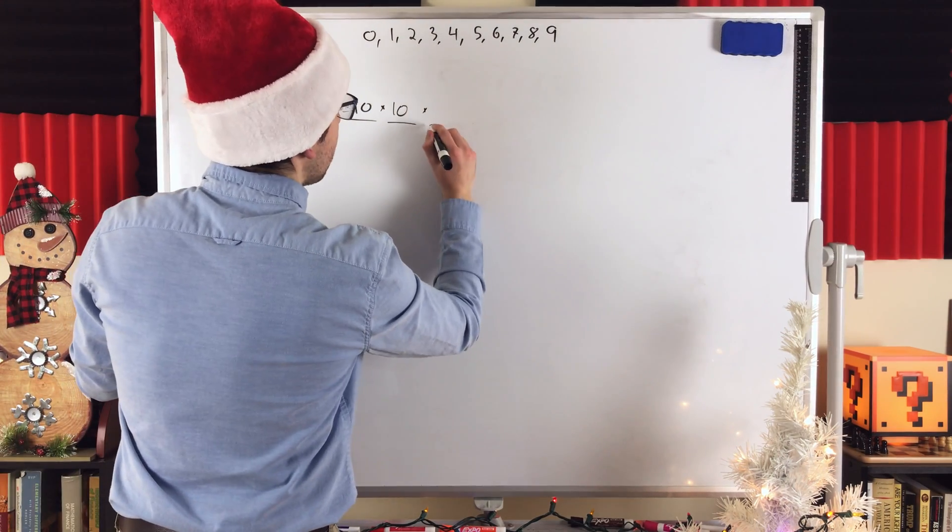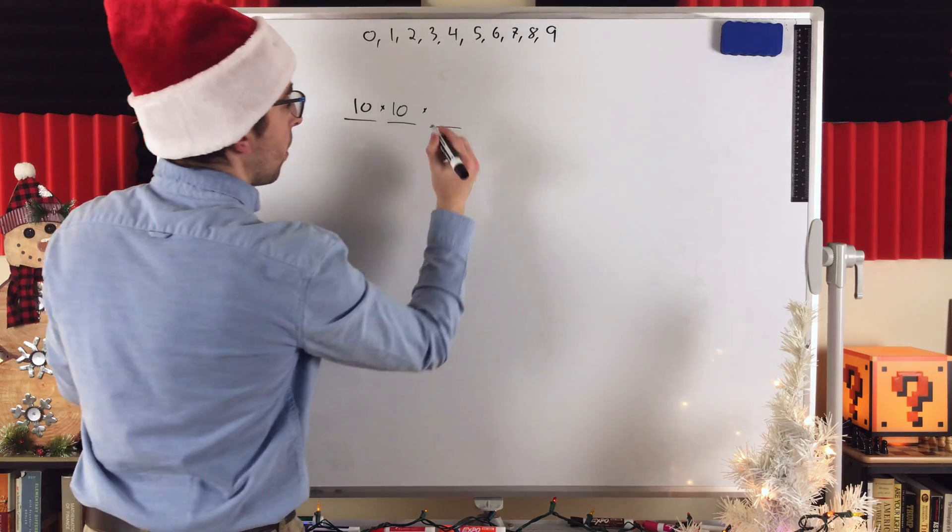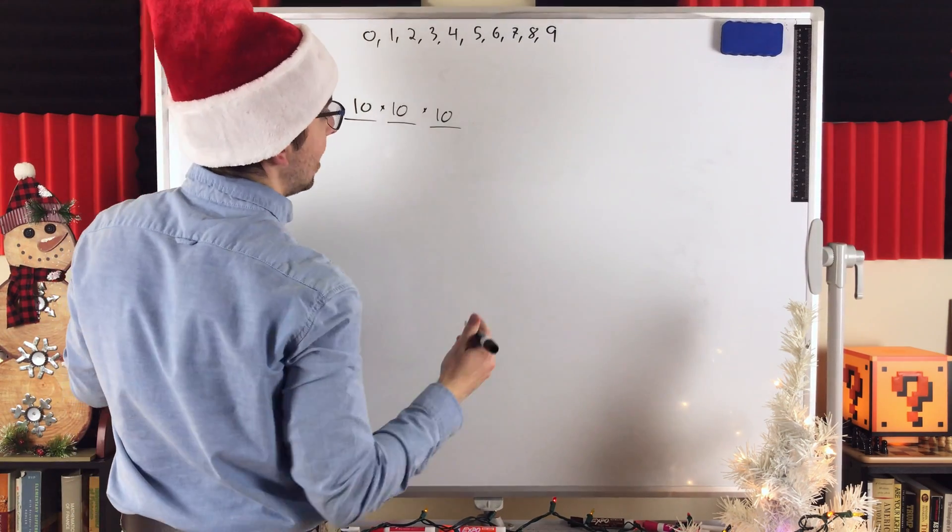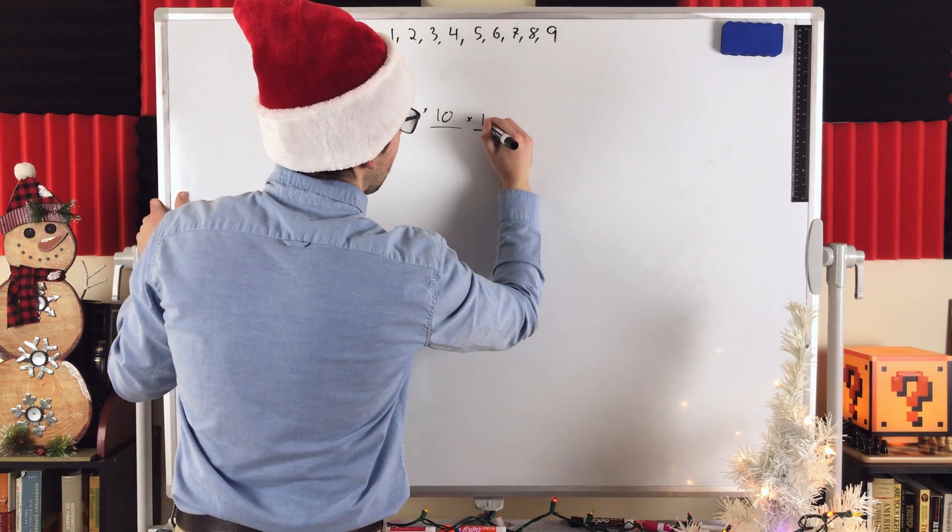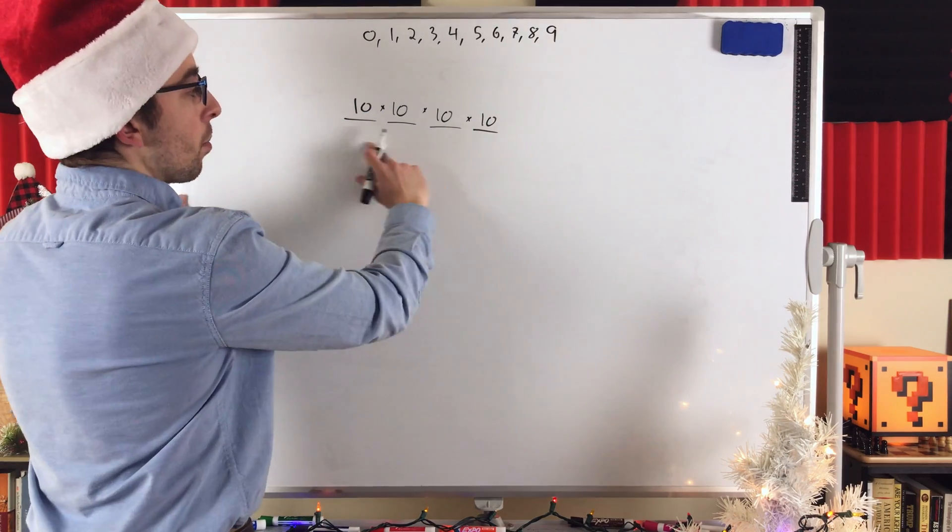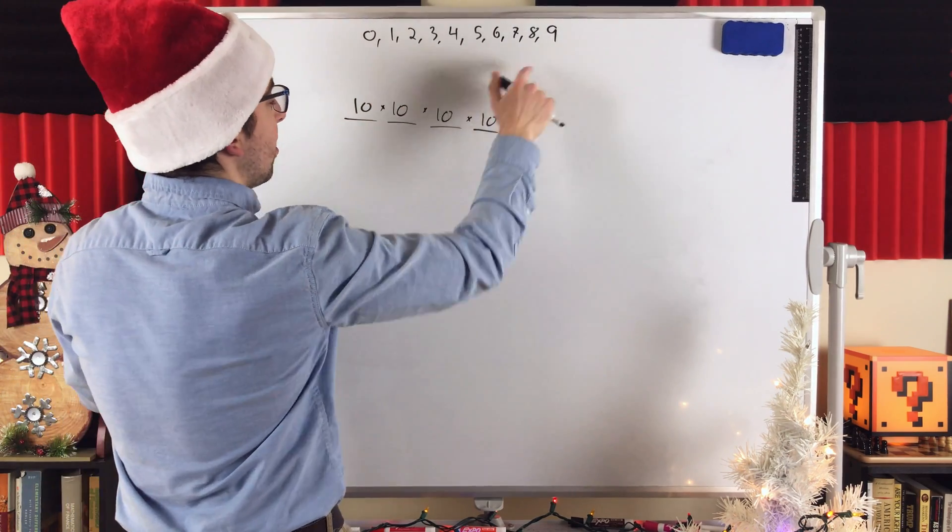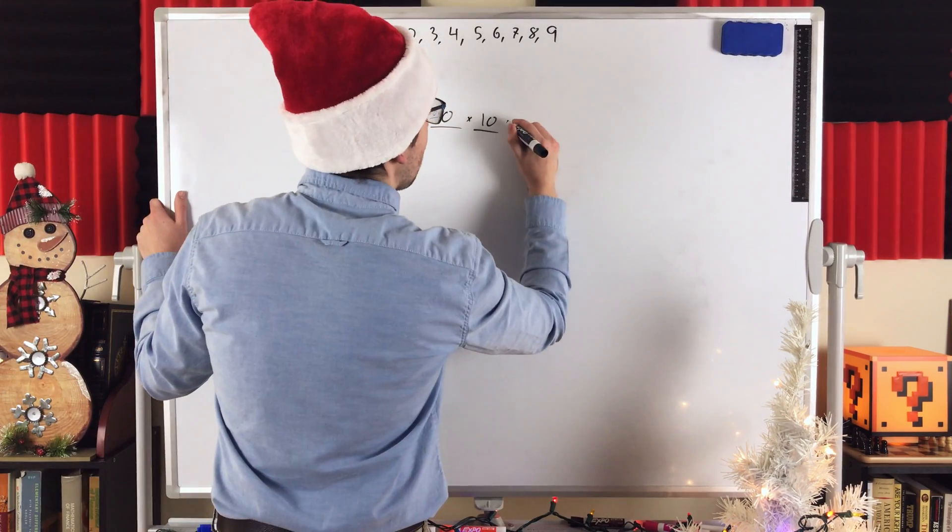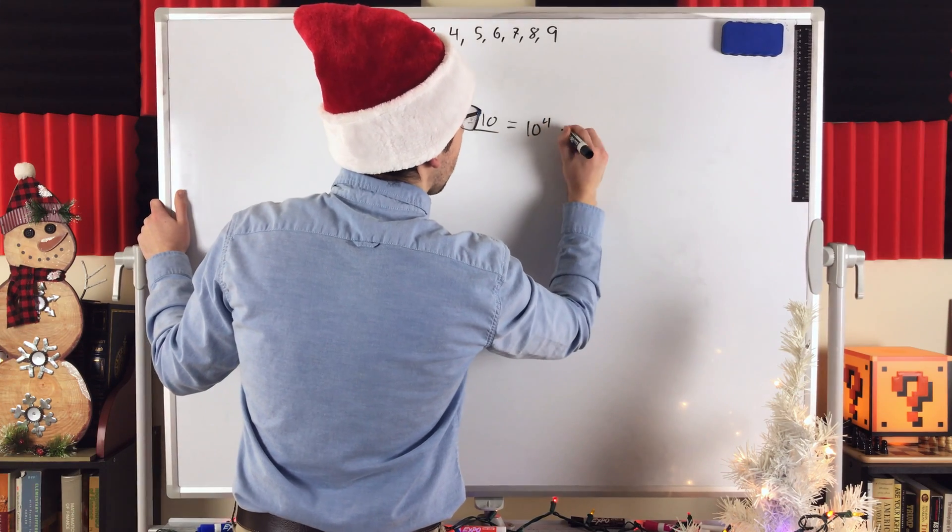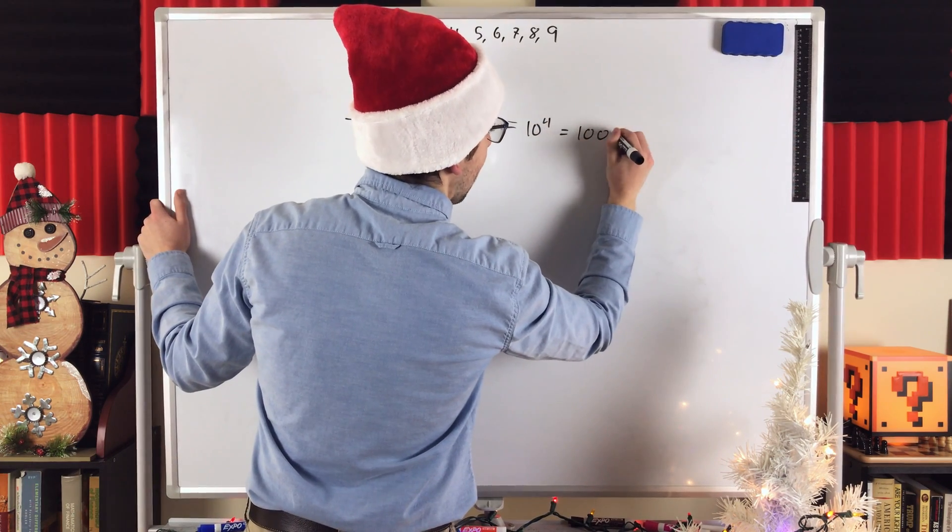Then, same thing, it's pretty simple. For the third number in the code, there's 10 possibilities, any one of these 10 digits. Same thing for the fourth number. And so, the total number of four-digit codes using the digits 0 through 9 and allowing repetition is 10 to the power of 4. Or, if you prefer, 10,000.